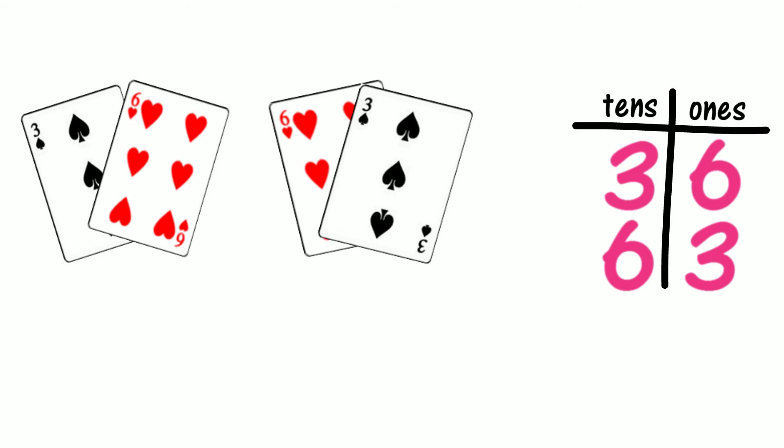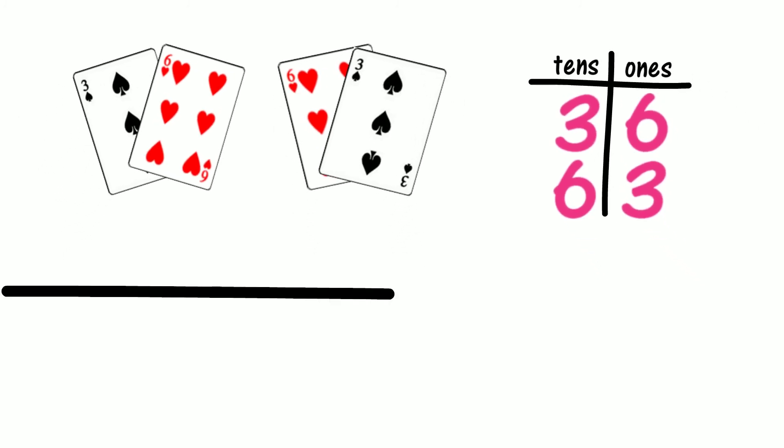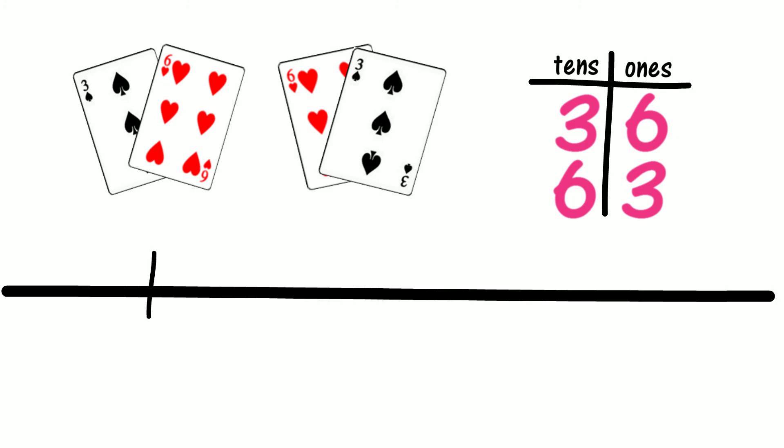Which number is lower? Is 36 lower than 63? Is a number with three tens lower than a number with six tens? Let's place 36 on a number line. So 36 is our lower number. Which end of the number line will 36 go on? Do low numbers go on the left of the number line? Let's place 36 near the left end of the number line.